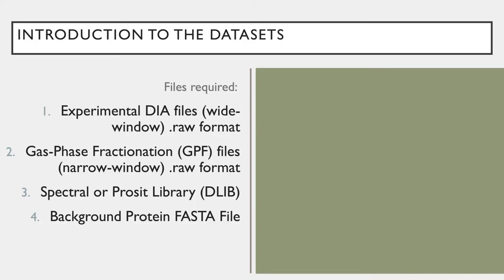When running the standard Encyclopedia workflow, four inputs are required. One, an experimental DIA dataset collection of a wide window variety. Two, a gas phase fractionation or GPF dataset collection of a narrow window variety. Three, a spectral or PROSIT library in a DLIB format. And four, a background protein FASTA file.